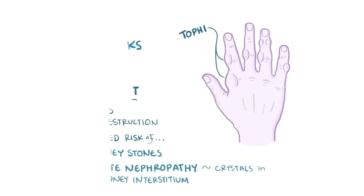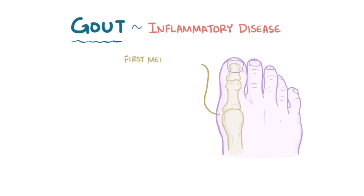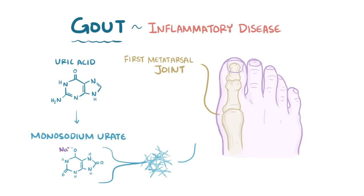As a quick recap, gout is a type of inflammatory disease that typically affects the first metatarsal joint, which is the base of the big toe, where uric acid precipitates to form monosodium urate crystals, which deposit in the joint and lead to inflammation and pain.